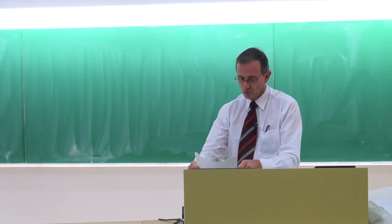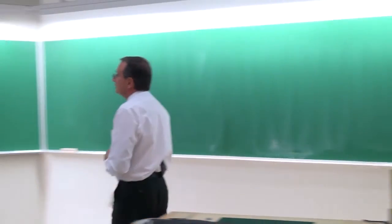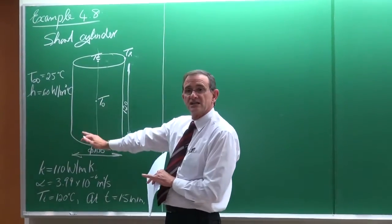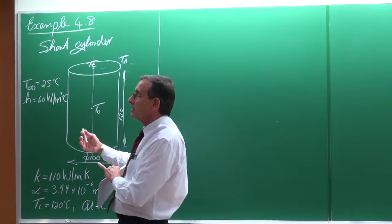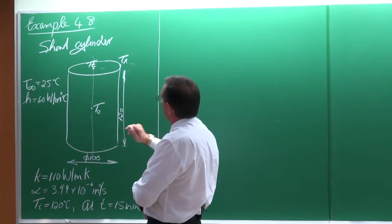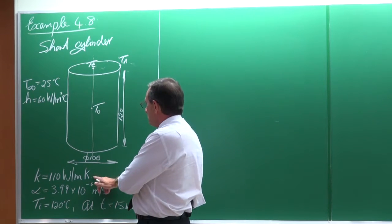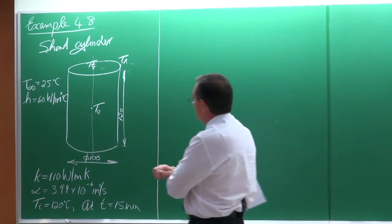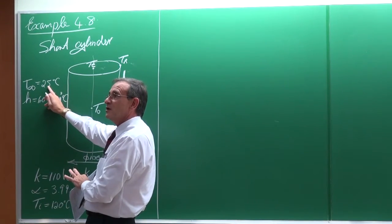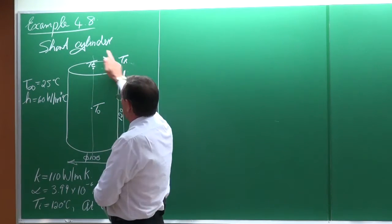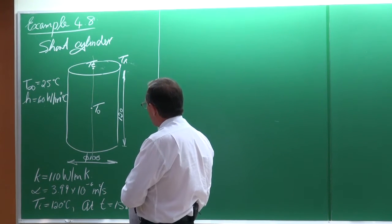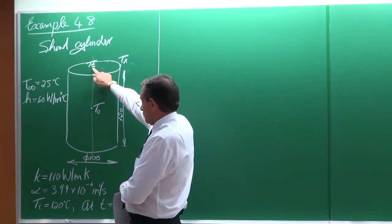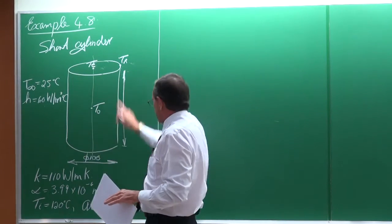Coming back to the previous lecture — unfortunately we couldn't complete it, so let's start at the beginning. It was based on example 4.8 in the textbook of Cengel and Ghajar. I've changed it so that you can calculate more temperatures on the body. The problem is a short cylinder. The K value is 110, alpha is given, and this body is initially at 120°C. It is then placed in an environment at 25°C with a heat transfer coefficient of 60, all around the body. We need to determine the center temperature after 15 minutes, the temperature at a second point after 15 minutes, and the temperature at the corner after 15 minutes.